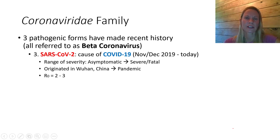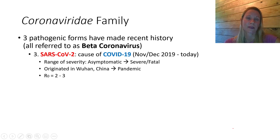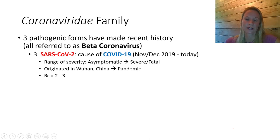The R-naught for SARS-CoV-2 is between two to three. That means one sick person, on average, will transmit to two to three people. That gives you an idea of how quickly this virus can spread through populations. With world travel, people on airplanes traveling to different parts of the world, bringing their germs and coughing — spreading the disease exponentially is what that R-naught value is telling us.